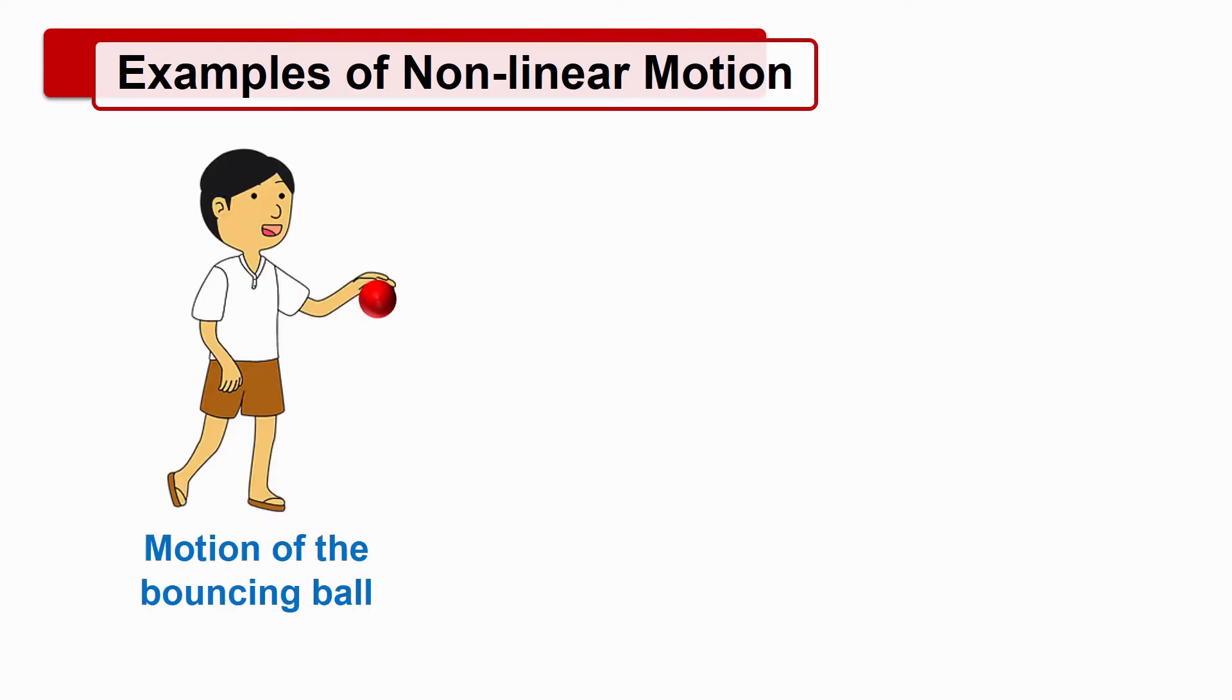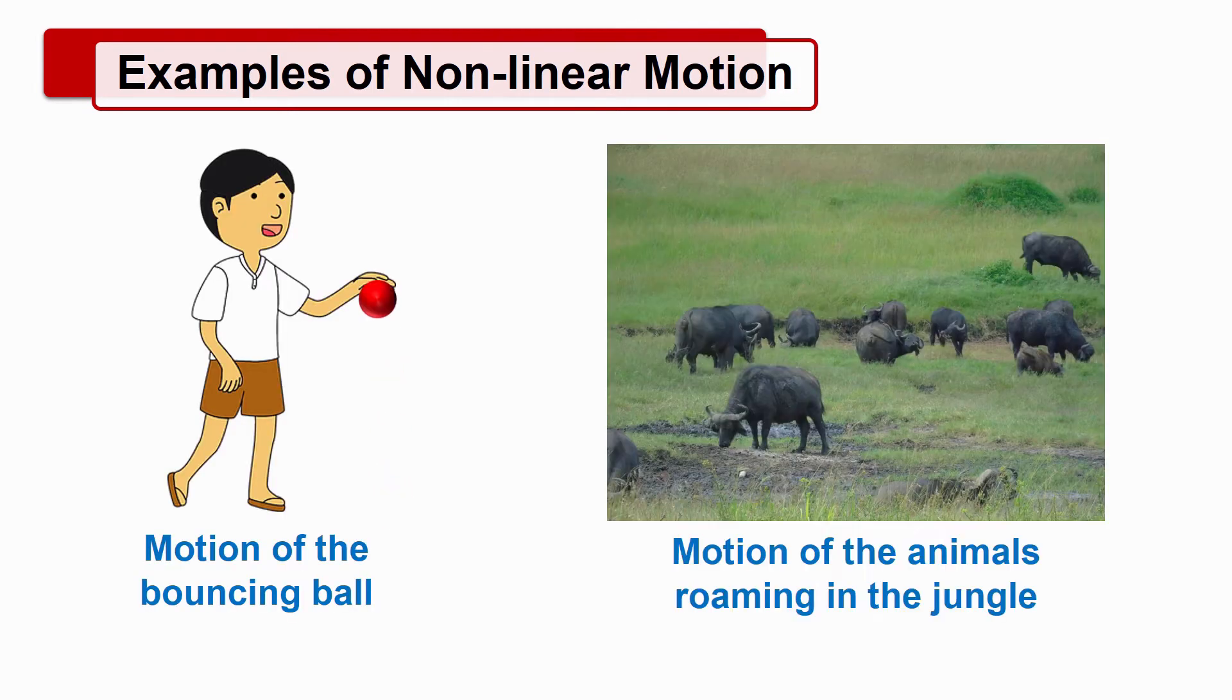Examples of non-linear motion are motion of the bouncing ball, motion of the animals roaming in the jungle, etc.